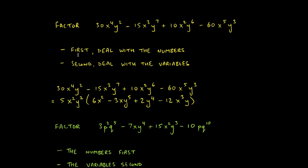As before, always deal with the numbers first, then the variables. Looking at 30, −15, 10, and −60, they all end in zeros or fives, so they're all multiples of 5. Starting there: 5 goes into 30 six times, into −15 negative three times, into 10 twice, and into −60 negative twelve times.